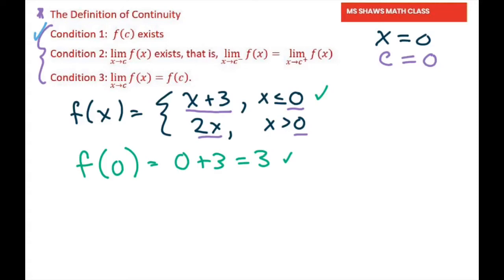So for condition two to pass, we do the limits on both sides of our zero. So we're going to take the limit as x approaches our c, which is zero from the left. That means all negative numbers of our function. And that should equal the limit as x approaches zero from the right of our function.